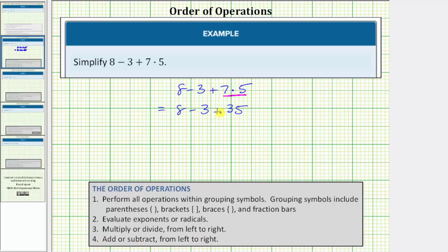And this does not say add first and then subtract. We add or subtract from left to right. So the next step is to find this difference. 8 - 3 = 5. So the expression simplifies to 5 + 35.